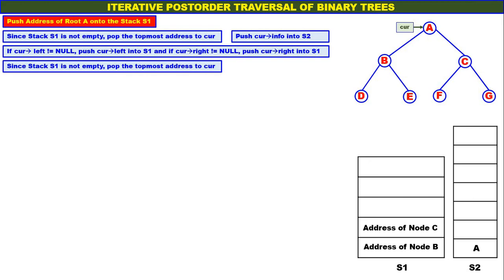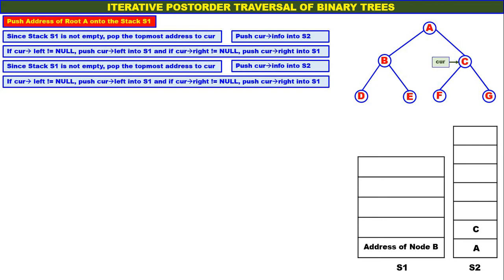Again check the stack. Since stack S1 is not empty, pop the topmost address to CUR. Topmost address is address of node C — pop it and assign to CUR. Push CUR info into S2, so C is pushed onto stack S2. CUR left is not equal to null — it is address of node F — so address of node F is pushed onto stack S1. CUR right is not equal to null — it is address of node G — so address of node G is also pushed onto stack S1.